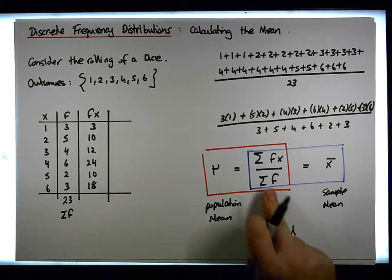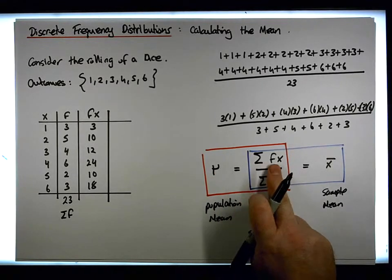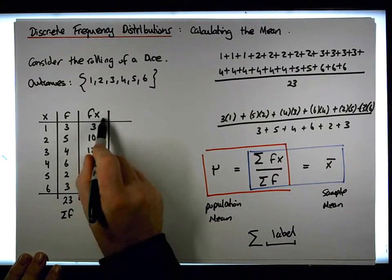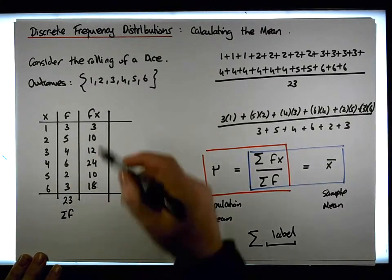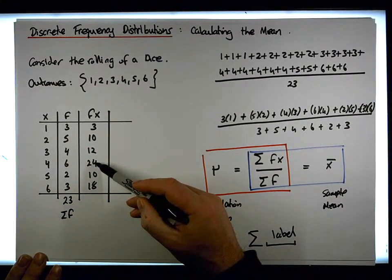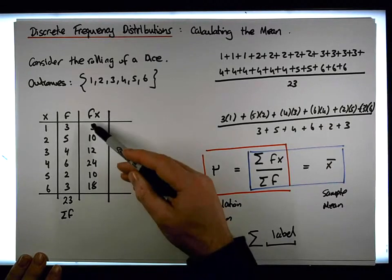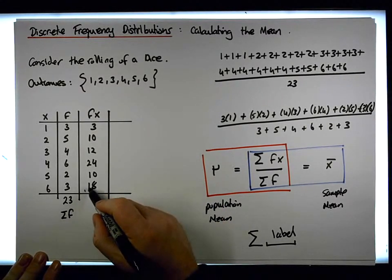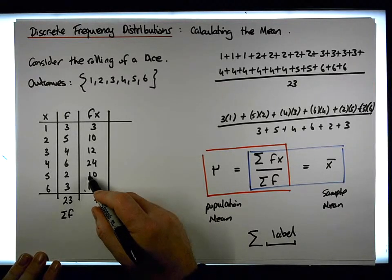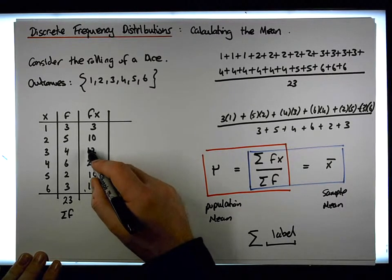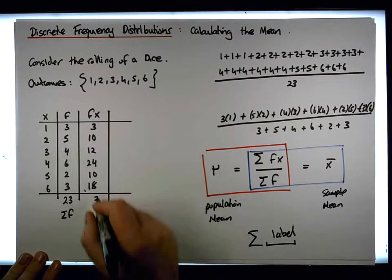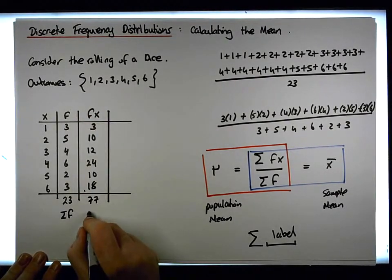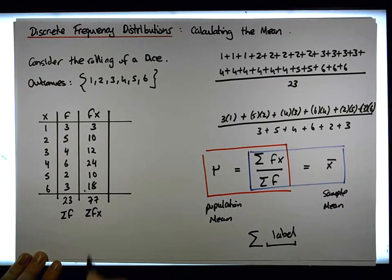Continuing: 2 times 5 gives us 10, and 3 times 6 gives us 18. Now to calculate the mean value we need the sum of the fx column. Summing up: 8 plus 4 is 12, plus 2 is 14, plus 3 is 17 — put down 7, carry the 1. 1 plus 1 is 2, plus 1 is 3, plus 2 is 5, plus 1 is 6, plus 1 is 7. So we end up with 77. This value of 77 is the sum of the fx's.